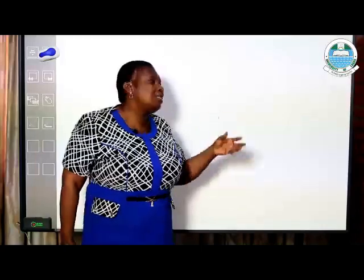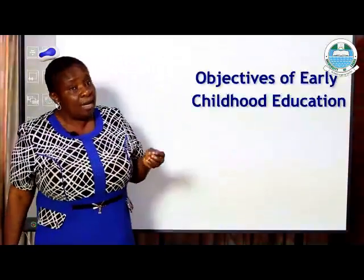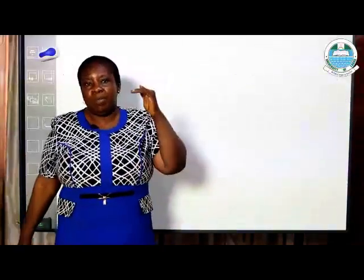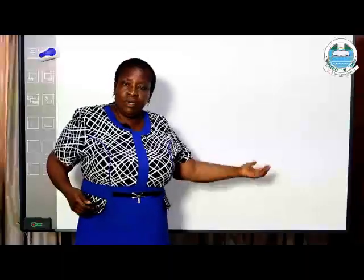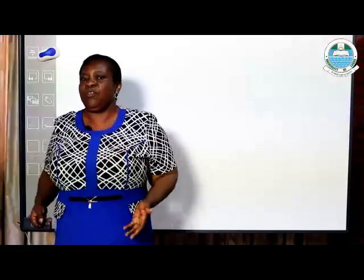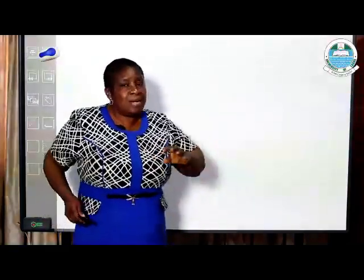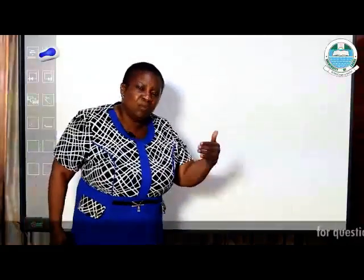Let's look at the objectives of Early Childhood Education. According to the National Policy of Education 2004, there are about eight objectives of Early Childhood or Pre-Primary Education. Number one: it effects a smooth transition from the home to the school. When children leave their parents, early childhood education serves as an intermediary — it prepares children for primary education. That is why it covers ages between 3 and 5.